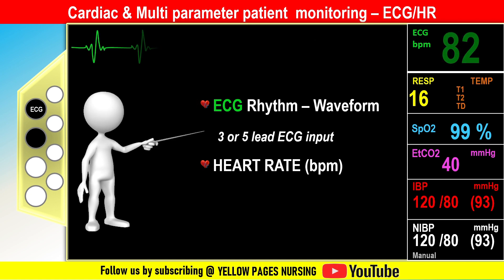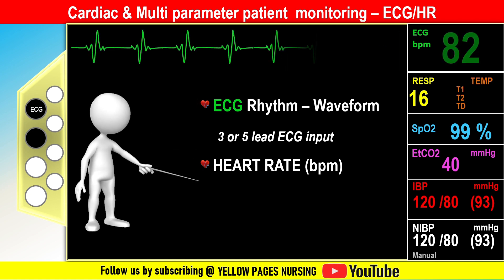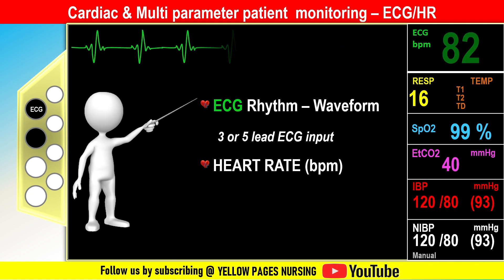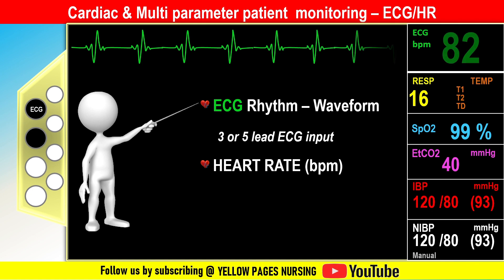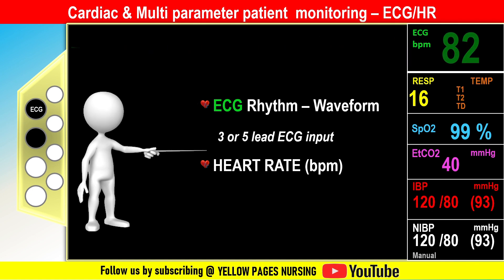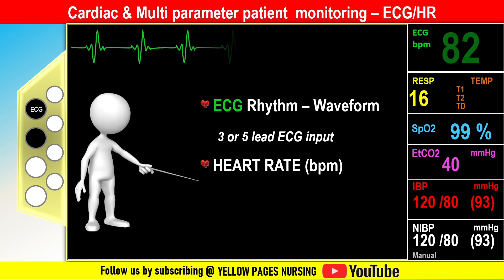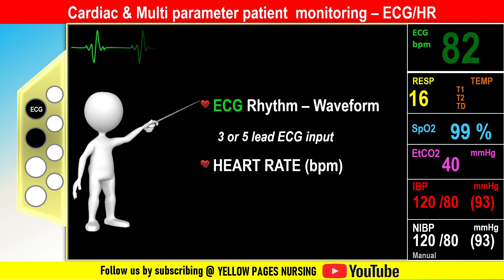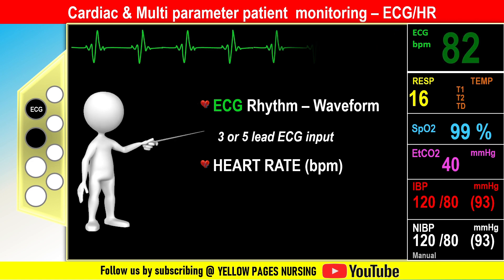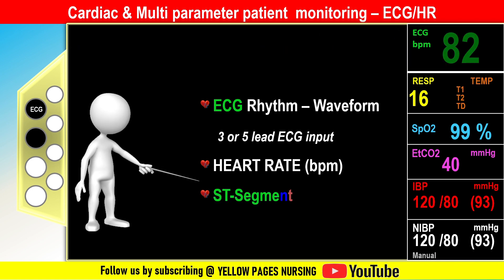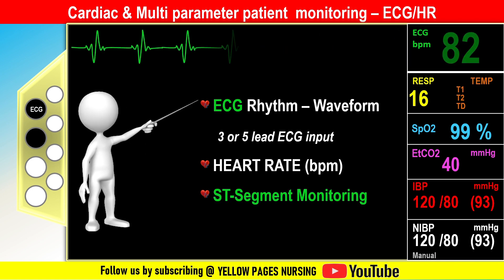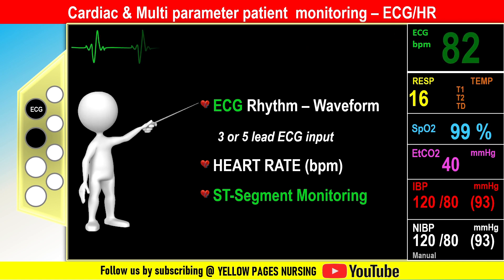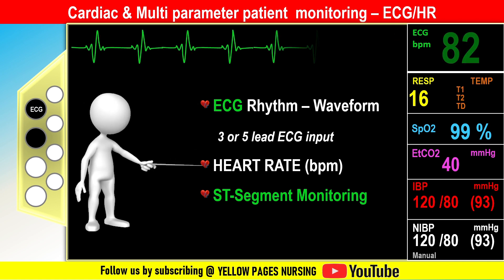Heart rate displays the number of heartbeats per minute. The monitor shows HR at 82 beats per minute along with the ECG rhythm or waveform. Both rate and rhythm help to detect any abnormalities or arrhythmias. ST segment monitoring helps to detect changes in the ST segment of the ECG, which may indicate myocardial ischemia.